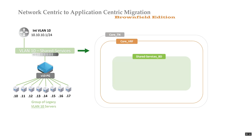I don't use the VLAN ID in the bridge domain name because in ACI, VLANs don't really matter. If we take it down to an application-centric approach, that VLAN 10 designation becomes meaningless. So I stay away from using the legacy VLAN ID in the bridge domain name — in this case naming it the shared services bridge domain.